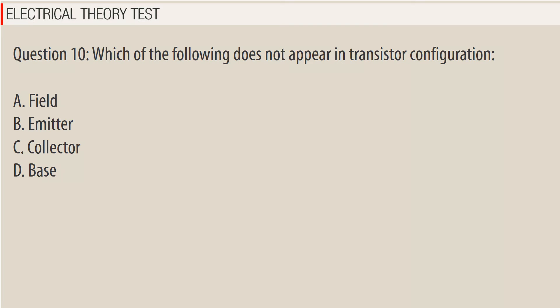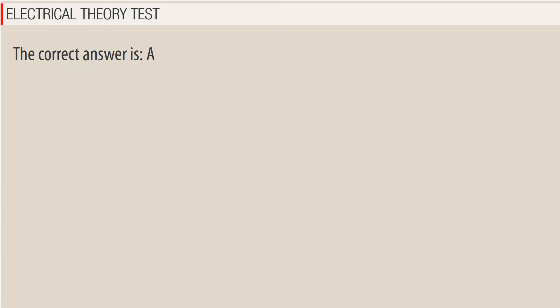Question 10. Which of the following does not appear in transistor configuration? A. Field. B. Emitter. C. Collector. D. Base. The correct answer is A — Field.